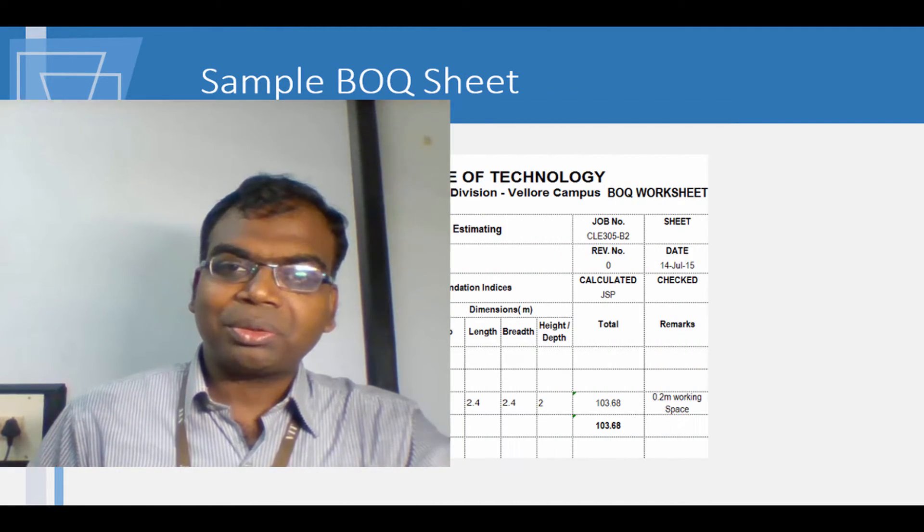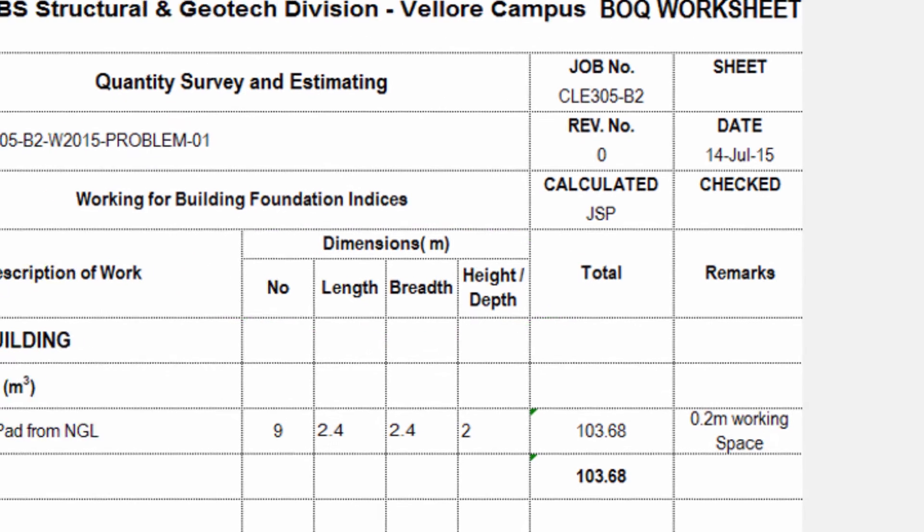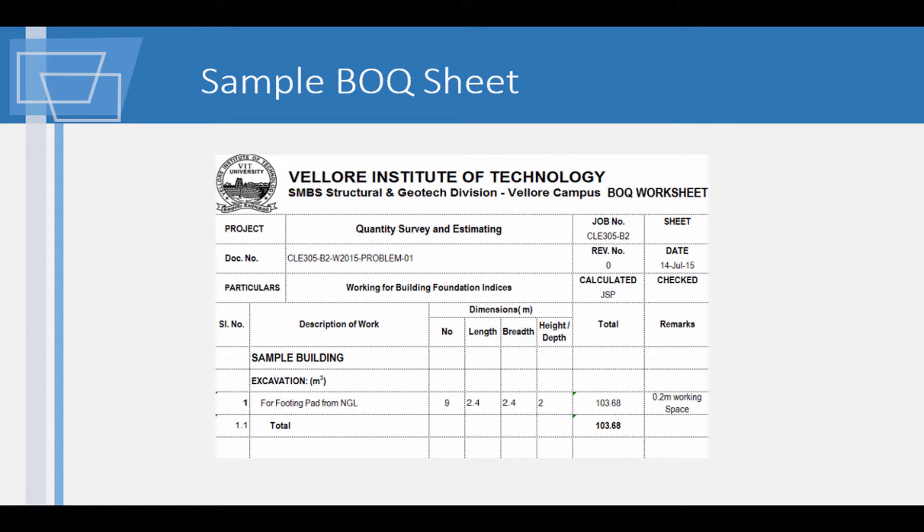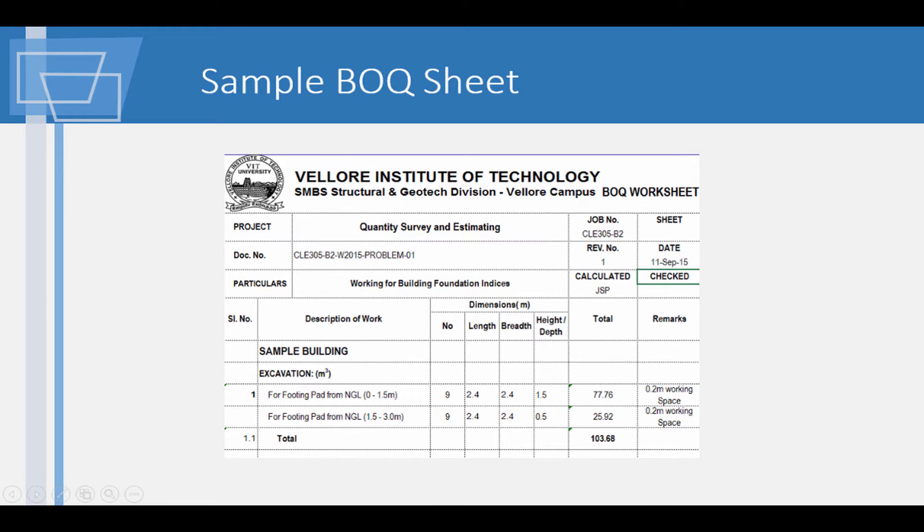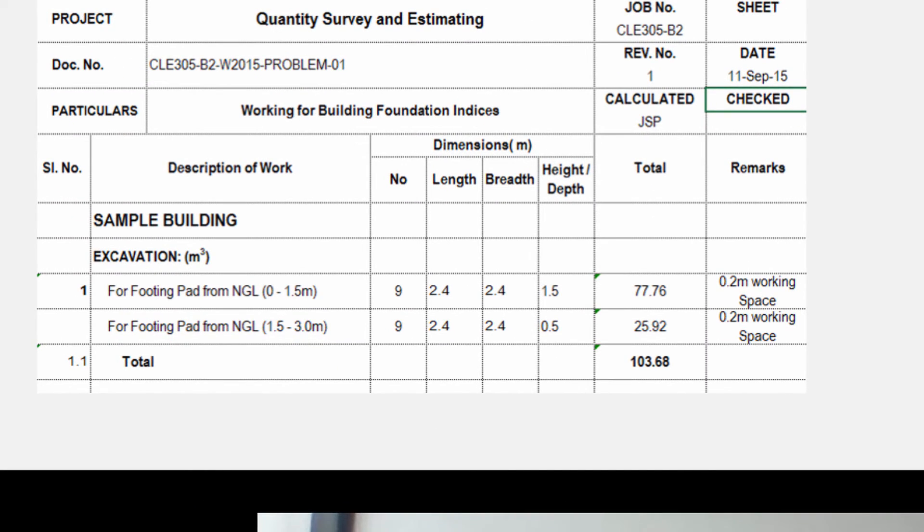The BOQ sheet that was prepared for one of the earlier problems would be used for this demonstration. Please note that the length, breadth and height or depth has been specified. The handbook specifies that this shall be the order in which dimensions shall be booked in. Provision 0 of the BOQ sheet has been considered as a single item. To make the same compliant to SP27, we modified the excavation, adding the head for a second stage.